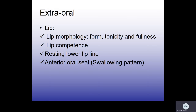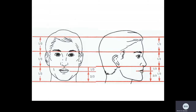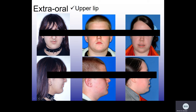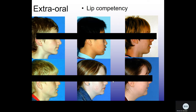Now we come to the lips. For the lips, we examine morphology, thickness, competency, resting lower lip line, and swallowing. The upper lip compared to the lower facial height is approximately one-third of the lower facial height. This patient has a short upper lip, this one an average upper lip, and this one a long upper lip. For lip competency, examine the patient at natural head position and rest — lips should meet, with up to 1 to 2 mm separation still considered normal. This patient has competent lips; these patients have incompetent lips.